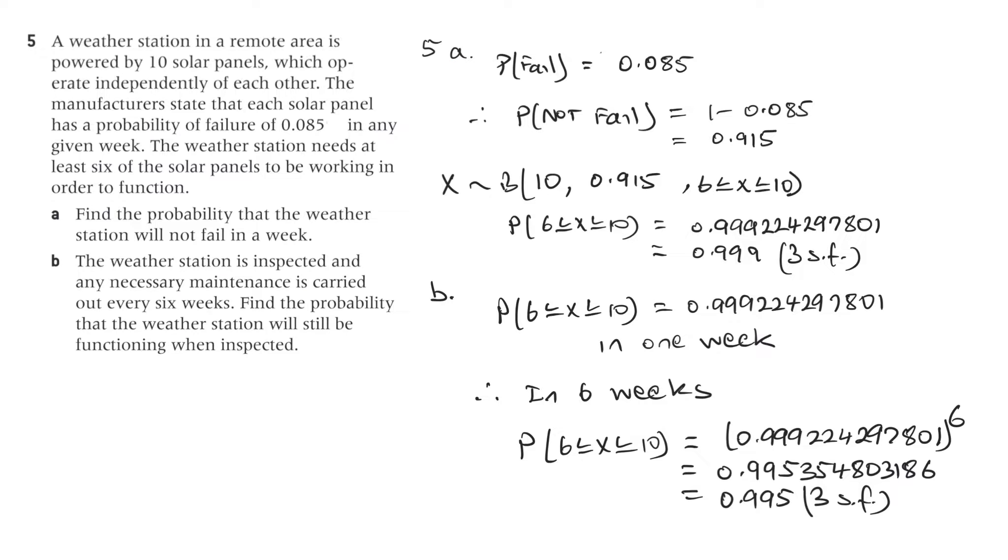So for 5A, the probability of failure is 0.085, which we have from here. Therefore the probability of not failure is one minus that. So X is distributed binomially. There's ten solar panels. It says here the weather station needs at least six of the solar panels to be working in order to function. So that means we need six, seven, eight, nine or ten. So because this is not fail, the range of X here is greater than or equal to six, less than or equal to ten.